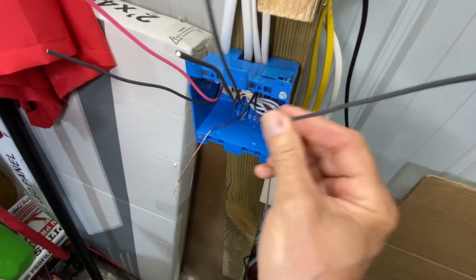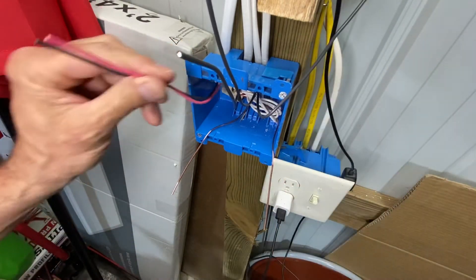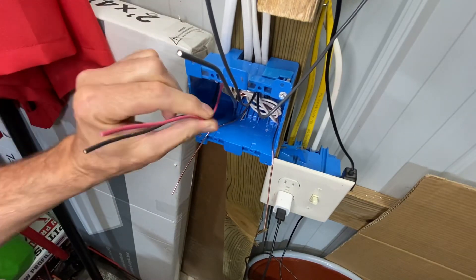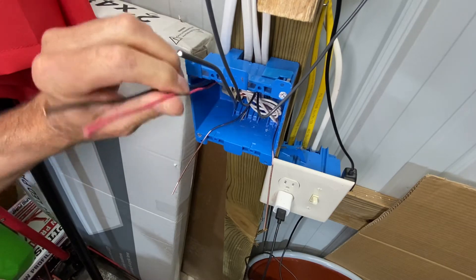Now, this is the one that goes to the light. Fold it up here. These are the two that go to the three-way. They're called travelers. Those are the two that go on the gold screws or the silver screws. Fold them up.